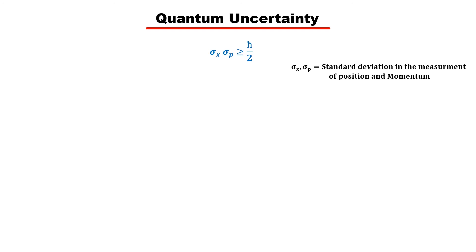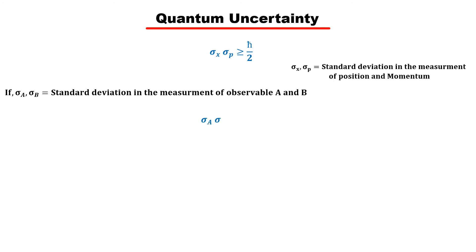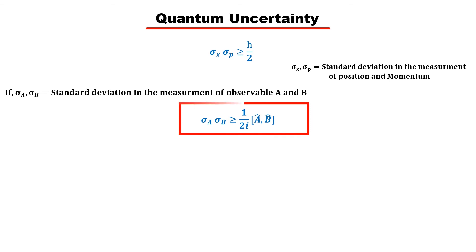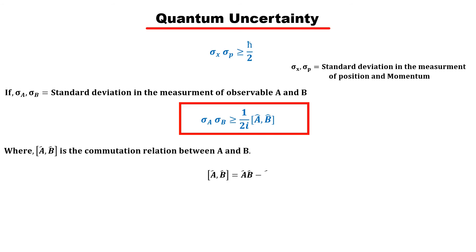Now the second question: why does the uncertainty in the measurement of position come only with momentum, and not with any other quantity? To understand this, we need to define the uncertainty relation for any two arbitrary observables A and B. If the standard deviation in the measurement of observables A and B is sigma_A and sigma_B, then the quantum uncertainty relation between them is given by this equation. This is the general form of quantum uncertainty, where [A, B] denotes the commutation relation between the two observables A and B, defined by this relation.